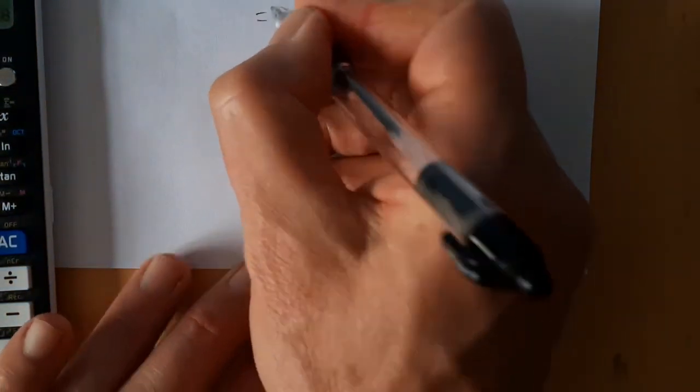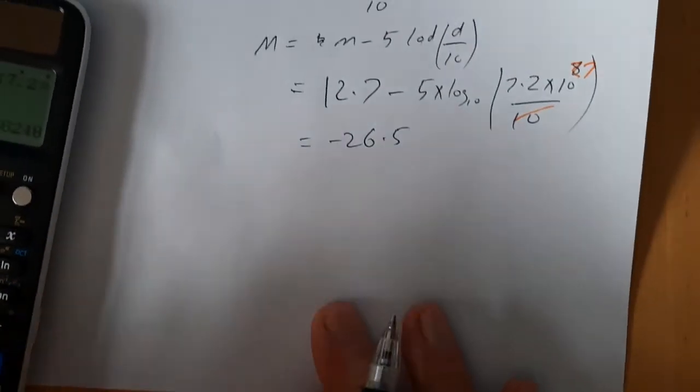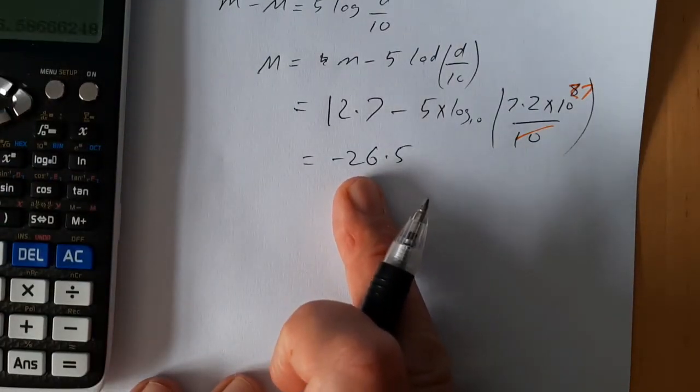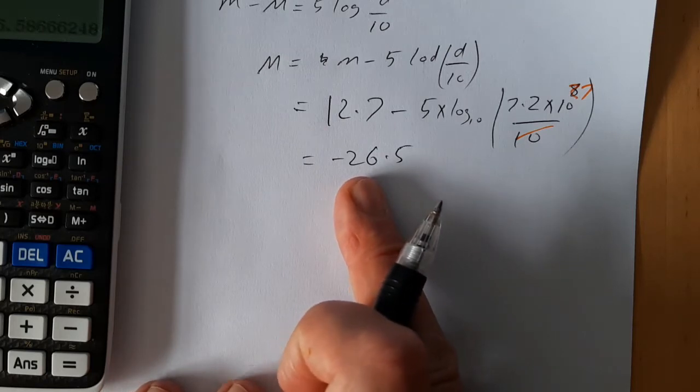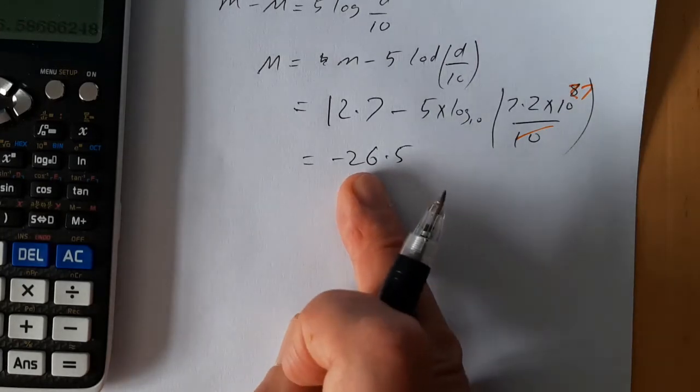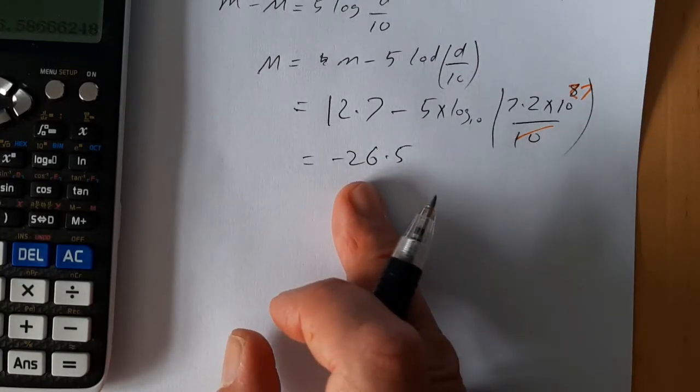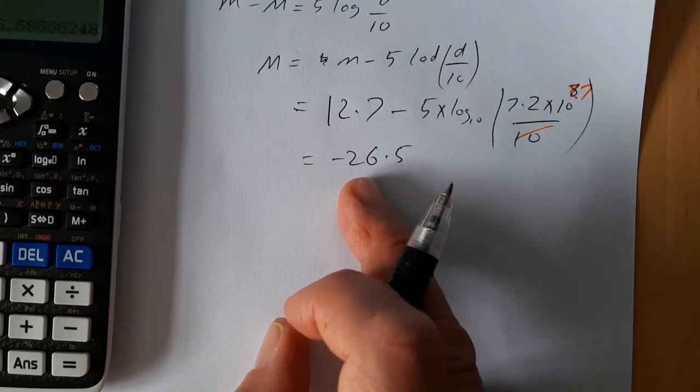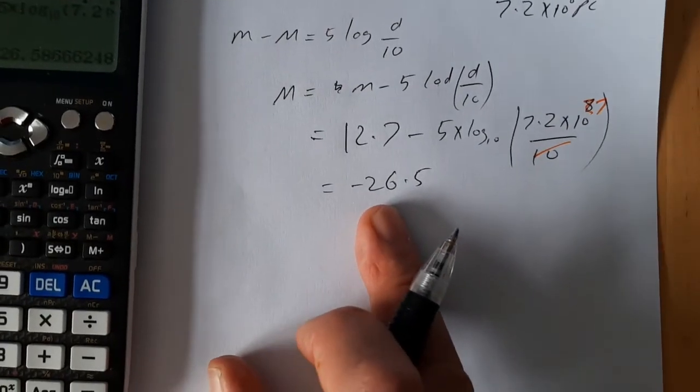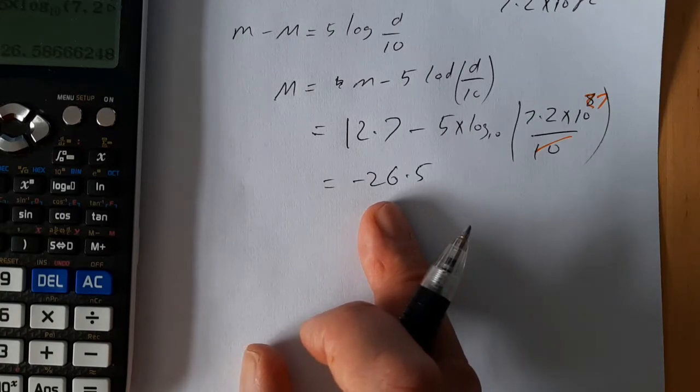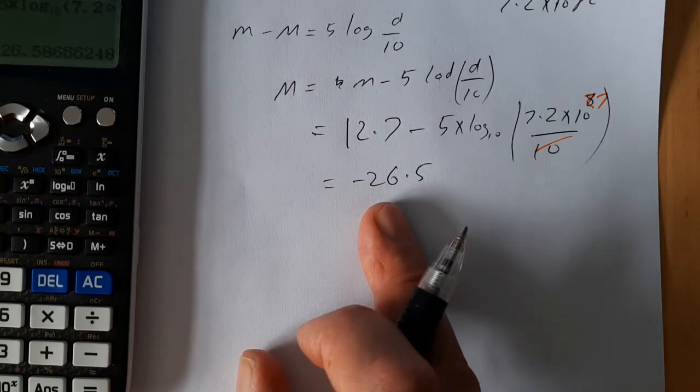Minus twenty six point five. Now, if you're a fan of these videos, you'd already be thinking that's a seriously bright object, isn't it? Because we saw that the peak magnitude of the type one A supernova was between minus nineteen and minus twenty. This is therefore a good six or seven steps away from that, each step being multiplied by two point five. And in fact, the people who first observed quasars really didn't believe the numbers that were in front of them. They thought they were beyond what was possible with physics.